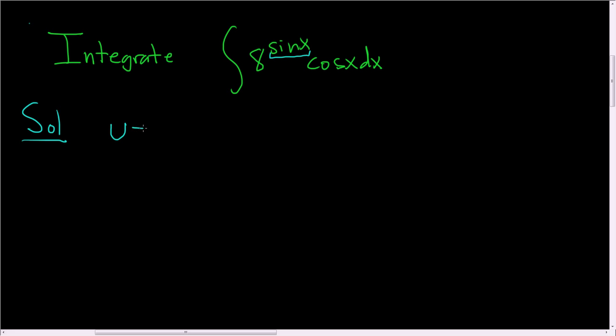The reason is, if you let u equal sine of x, then du, well that's the derivative of sine. The derivative of sine is cosine x, and then we have the dx here.